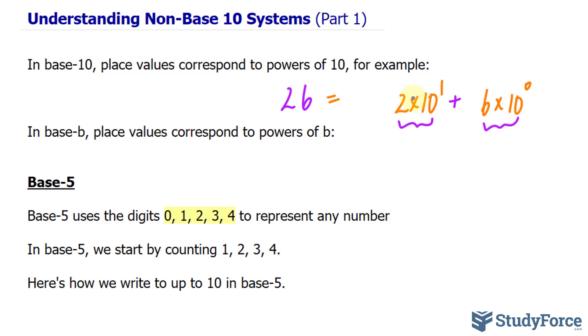2 times 10 is 20. And 6 times 10 to the power of 0 — remember, that is equal to 1. 6 times 1 is 6. So 20 plus 6 is 26.